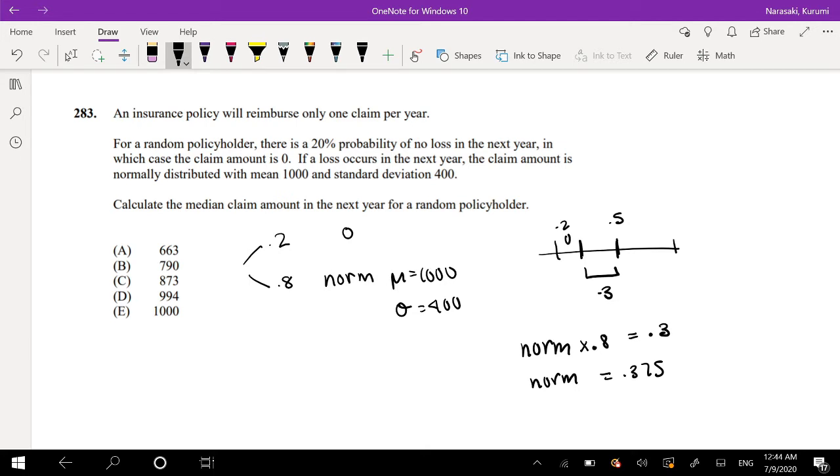All right, so then now we have our things to use to standardize it. So when we standardize it, again, we're looking for when x is less than the 50th percentile, which would equal 0.5. So we're looking for this value.